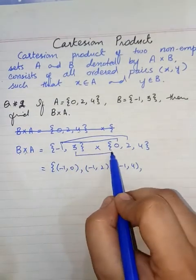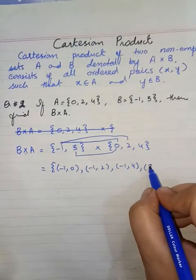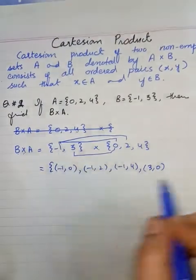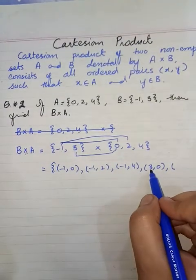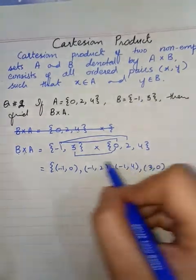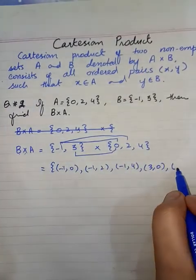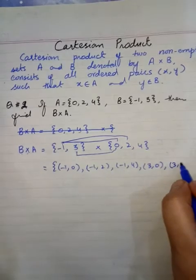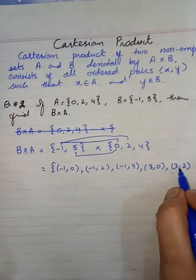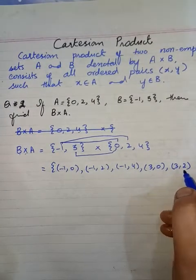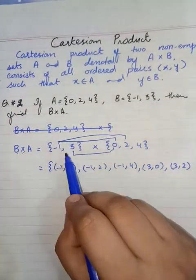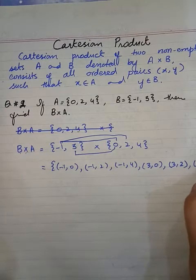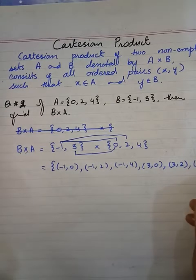Now it's turned for 3, 0. You have to write first coordinate from the first set. I am repeating my sentence that you have to write first coordinate from the first set and second coordinate from the second set. 3, 0, 3, 2. I cannot write it 2, 3 because 3 is from first set and 2 is from second set. Next is 3, 4. Ordered pair complete.